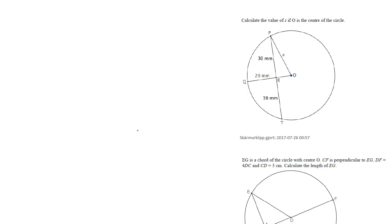Let's solve some more examples as promised. Calculate the value of s if O is the center of the circle. As you can see, s is a radius and QR and RO are also radii. If I name RO as x, then s is 20 plus x.